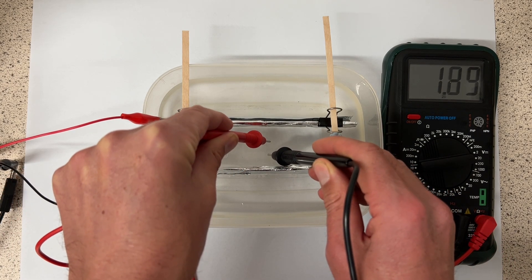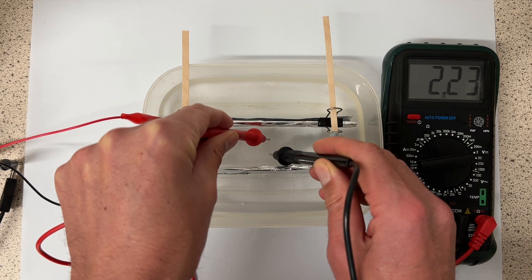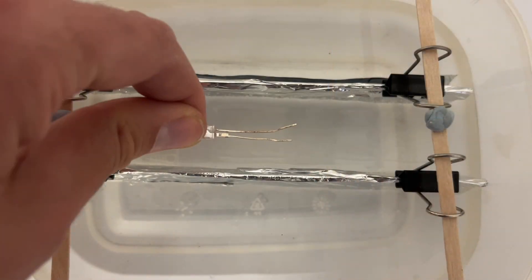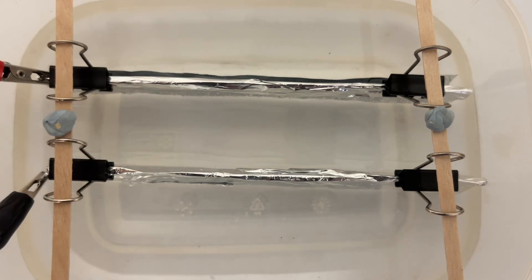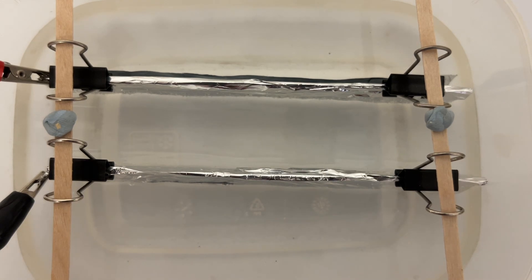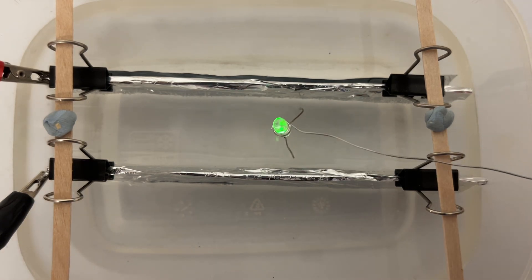You can also use a multimeter to measure the potential difference between two points in the gap. Don't forget that the longer leg of the LED is the one that needs to be nearer the positive terminal, and you'll need to push the legs of the LED far enough apart so that they have sufficient potential difference to light the LED.